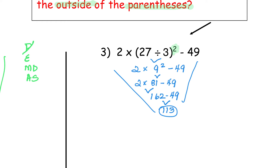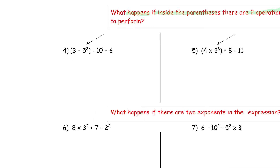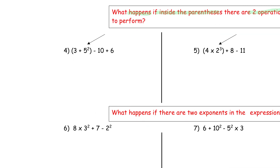Don't forget you have that exponent on the outside. On the next page, we're looking at what happens if inside the parentheses there are two operations to perform. Number four: we have three plus five to the second minus 10 plus six. I noticed this time the exponent is next to the five, so when the exponent is on the inside, it automatically goes with the number that it's next to.